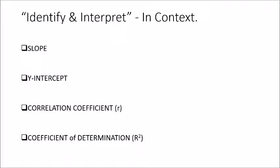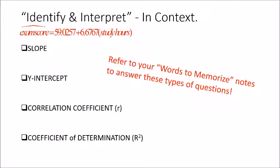So then next, you're always going to be asked a lot of questions about identify and interpret the key components in context of the problem. So definitely slope, y intercept, correlation coefficient, and coefficient of determination. You need to refer to that words to memorize note sheet we talked about in order to interpret these correctly and just don't forget your context. So these problems happen all the time and you should definitely pay attention to that words to memorize. You can get off of those a little bit, but we found that sometimes when students don't use that to interpret their components in context, they're going to forget key information.